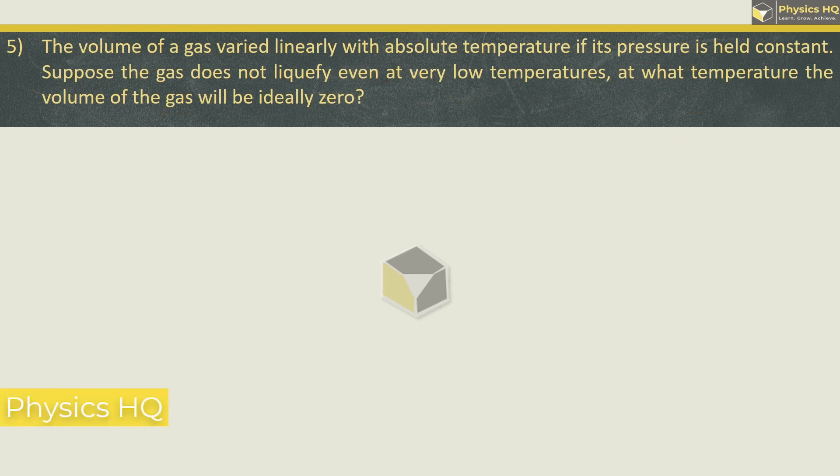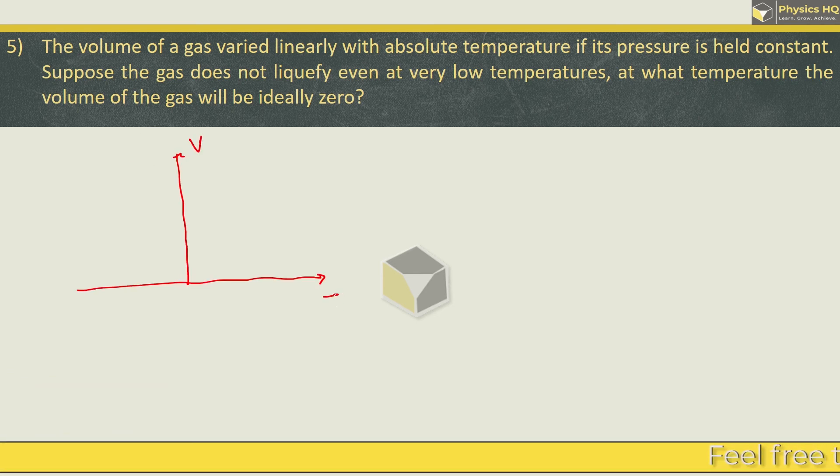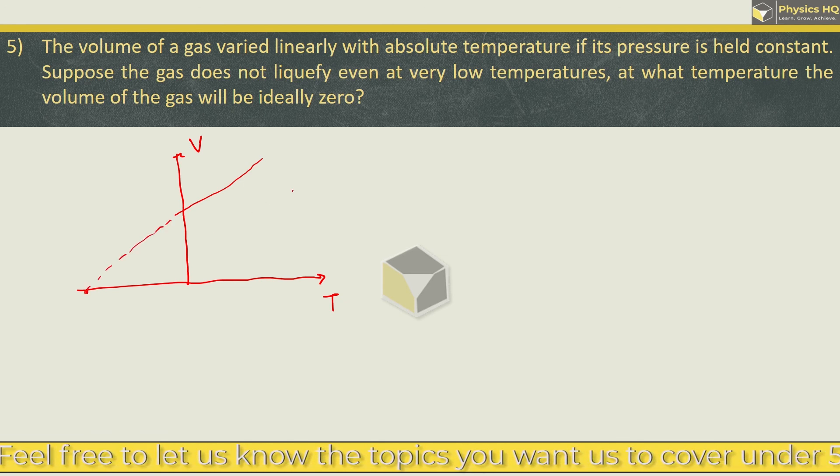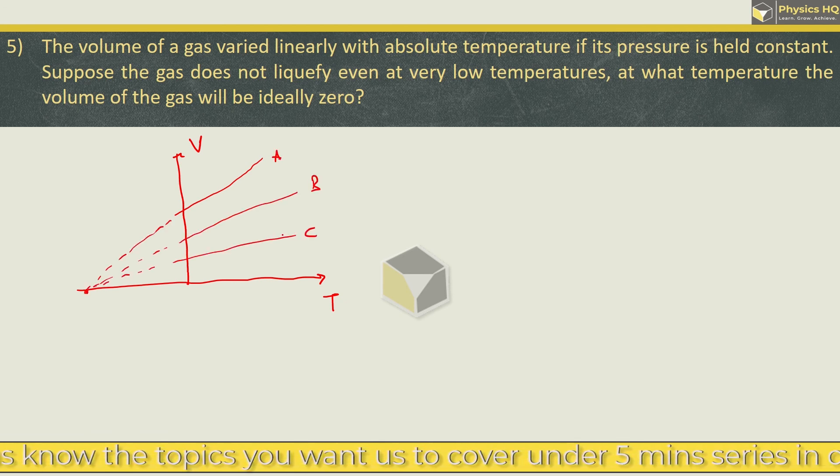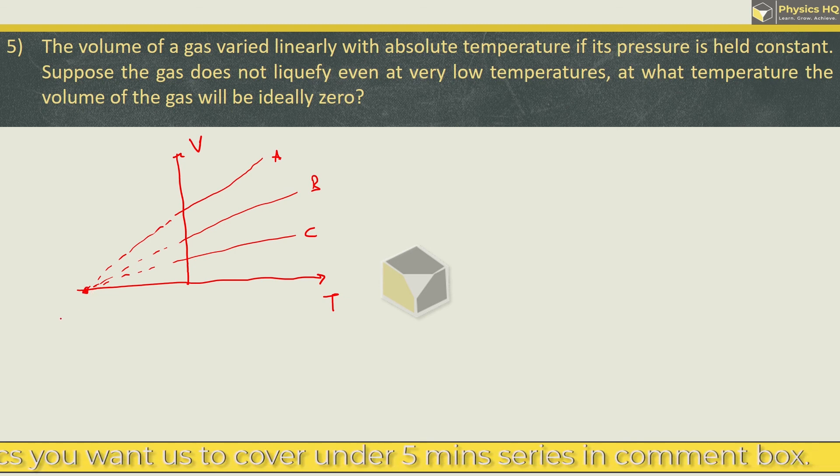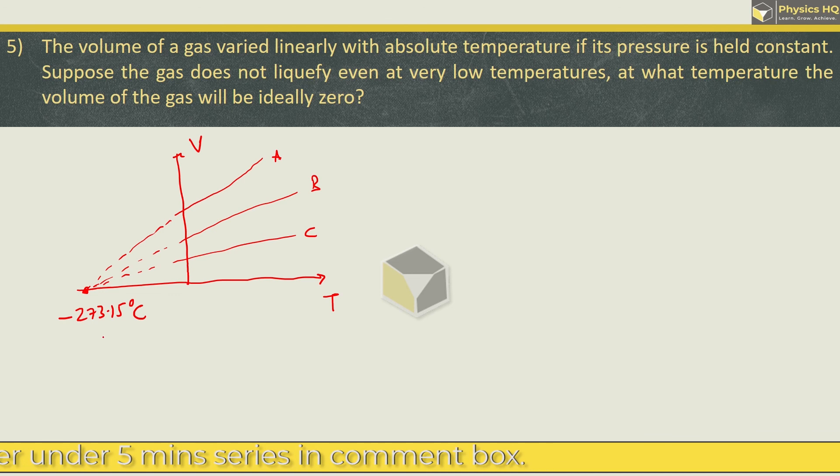Next, volume of a gas is varied linearly with absolute temperature if its pressure is held constant. Suppose the gas does not liquefy even at very low temperatures. At what temperature will the volume of the gas be ideally zero? For this we need to refer to that graph for volume versus temperature where pressure was kept constant. For various gases, when the graph was drawn, it converged at one point. This point is nothing but minus 273.15 degree Celsius, and this is where the absolute Kelvin scale was defined. This is the temperature at which the volume of gas will be ideally zero. Hope you all understood this.